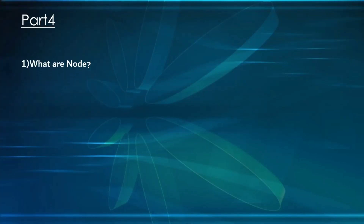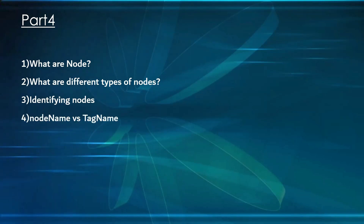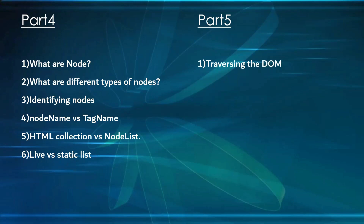In Part 4, we will understand what nodes are, the different types of nodes, how to identify nodes in our HTML structure, and the difference between node name and tag name. Finally, we will see the differences between HTMLCollection versus NodeList, and understand what is live versus static.